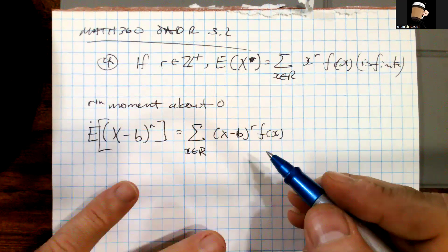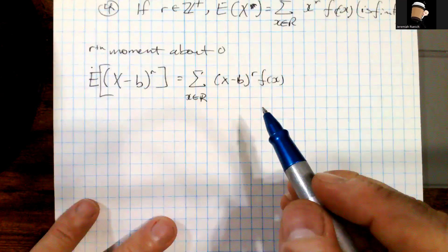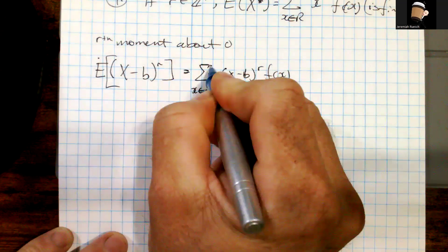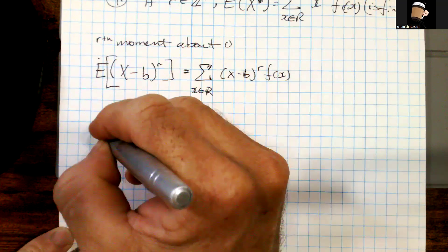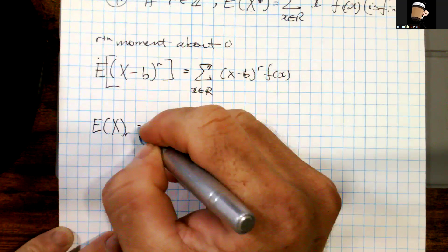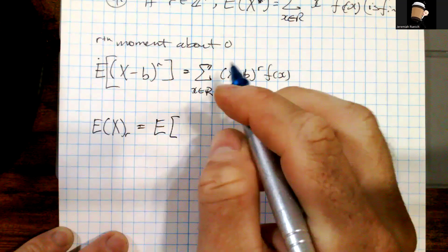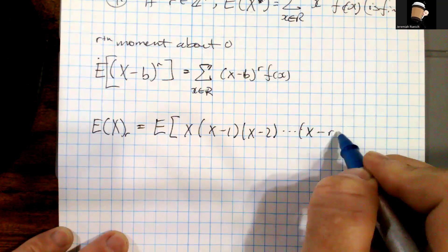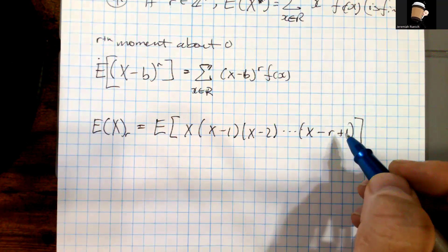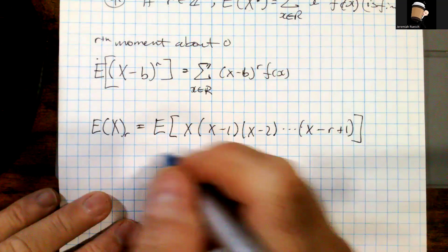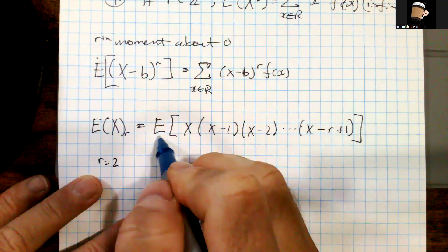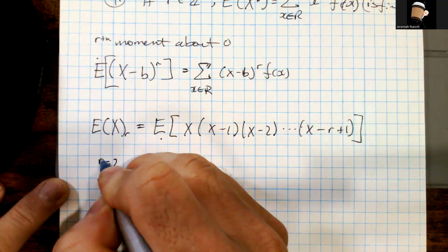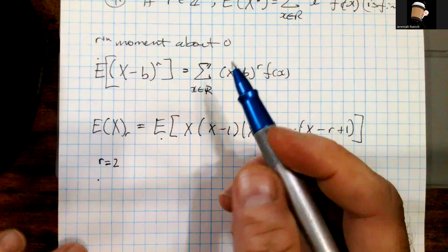Let's look at this particular expansion. We define X^(r) = x·(x−1)·(x−2)···(x−r+1), which is called the factorial moment. When r = 2, we can use it to derive a really nice relationship that we just used in the previous example — it's a progression of useful tools.